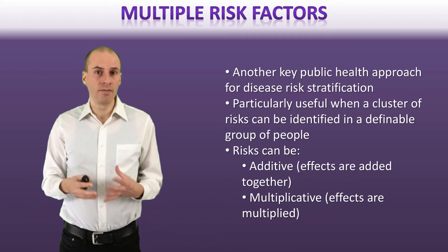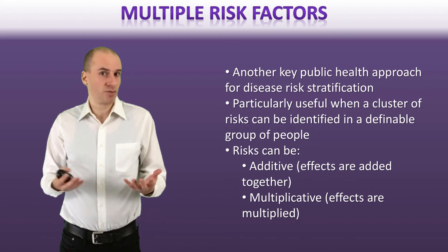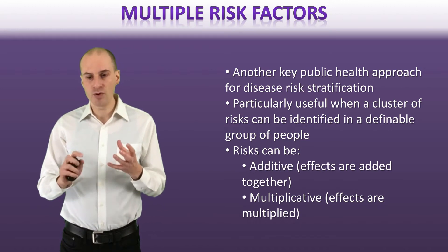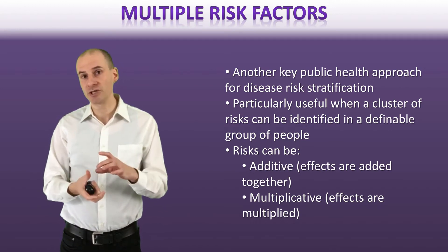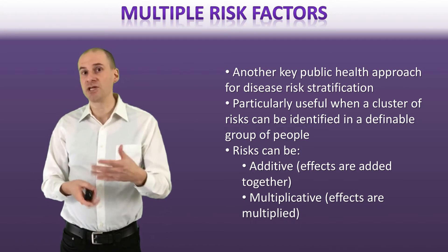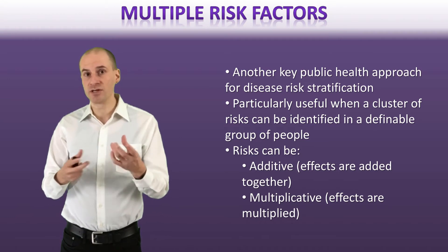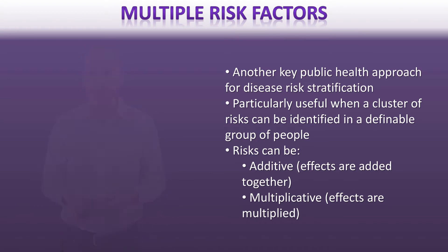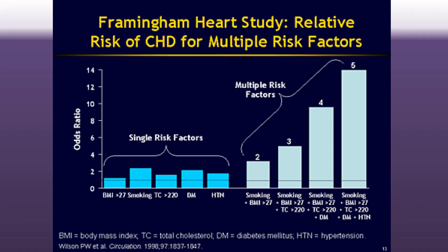That's the way biology works sometimes — if you are impacting things from two directions, it's actually much worse than just the two separate risks independently. Here's an example of multiple risk factors as expressed through the Framingham Heart Study.